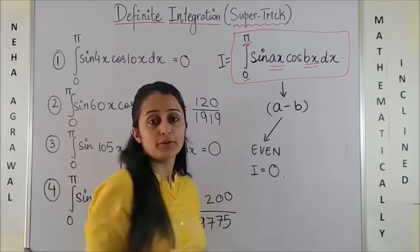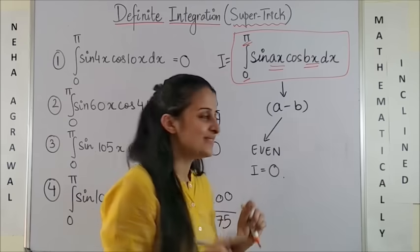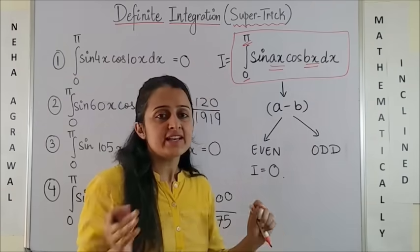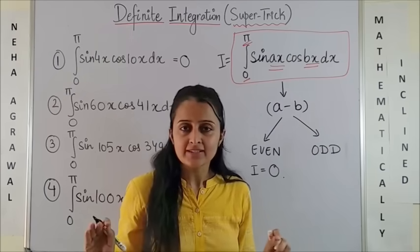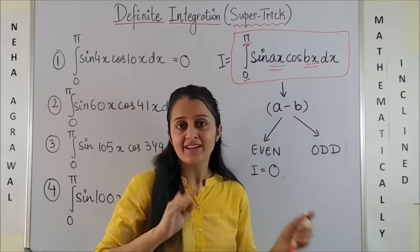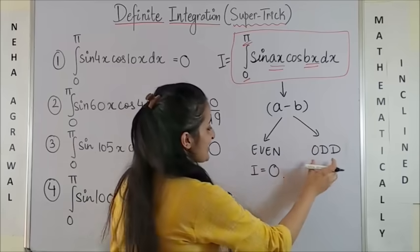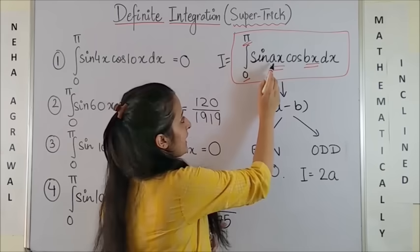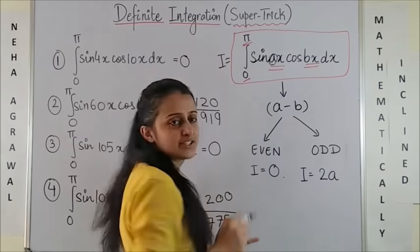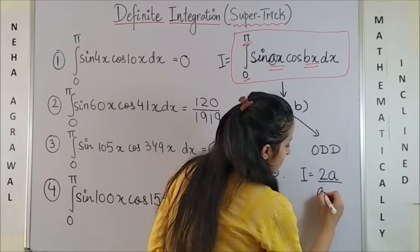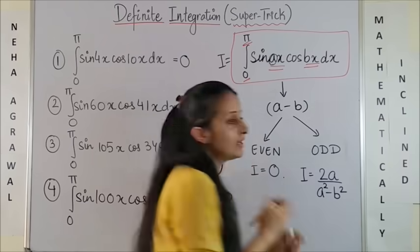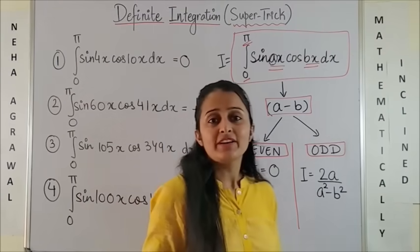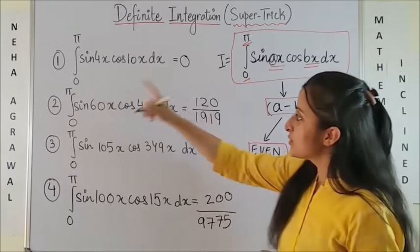And in case it turns out to be odd — now when I say even or odd, I am not concerned about the plus or minus sign — then the integral I is equal to 2a upon (a² − b²), where a is the number attached to sine. That's all.